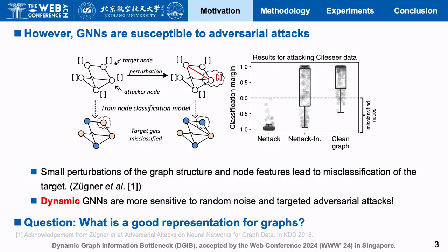More importantly, the dynamic GNNs need to process temporal information. They complicate and cover the spatial-temporal patterns, which makes the GNNs more prone to random noise and targeted adversarial attacks.